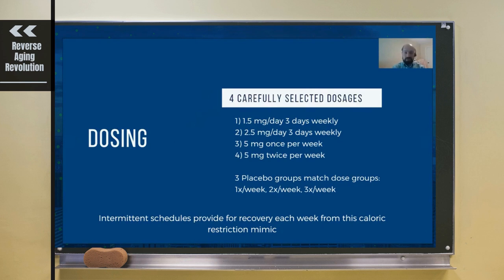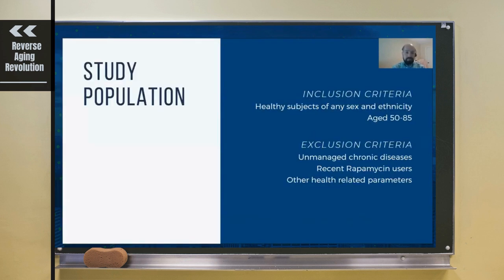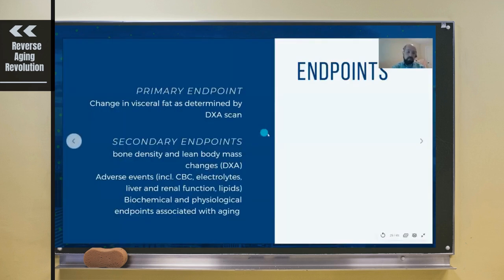We have extensive inclusion/exclusion criteria—you can look at ClinicalTrials.gov for a full list. We'll also be publishing this summer. Our primary endpoint needs to be a clinical endpoint, so we're looking at visceral fat as determined by DEXA scan. Secondary endpoints include things like bone density and adverse effects.